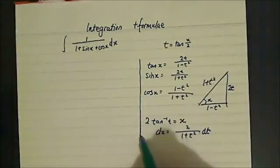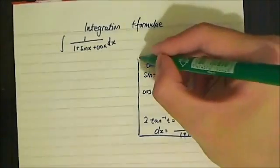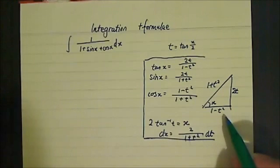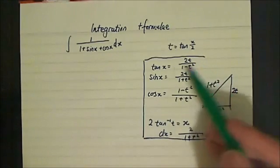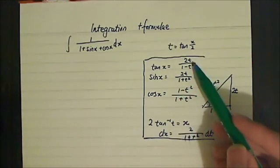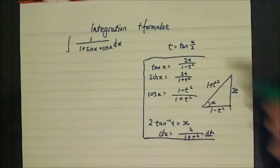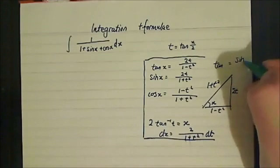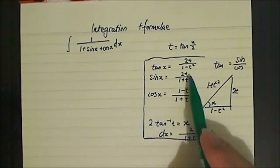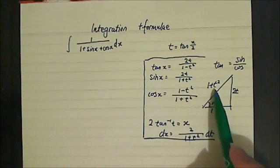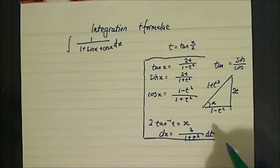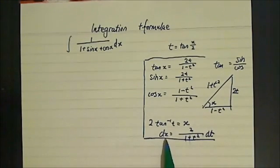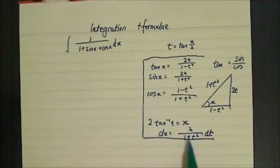It's actually worthwhile trying to memorize all of these formulas. If you can visualize the triangle, it helps you memorize sin x and cos x. The best way is to know your double-angle formula for tan really well, so that you have 2t over 1 minus t squared. And because tan is essentially sin over cos, we know that sin will have 2t over 1 plus t squared, and cos will be 1 minus t squared over 1 plus t squared. And obviously, dx — it's very important to remember — is changed into 2 over 1 plus t squared dt.